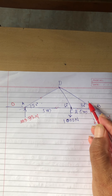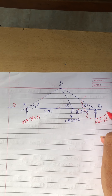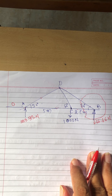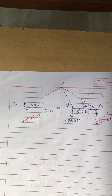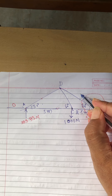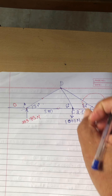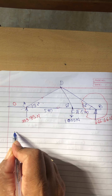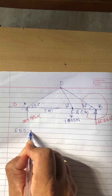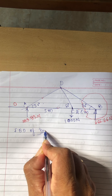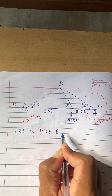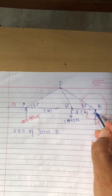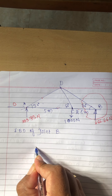I will start with the FBD of joint B. See here how I am drawing the FBD of joint C — it is not a big task. Whatever joint B is there, the same joint I am picking. I am cutting it here and taking it out like this.